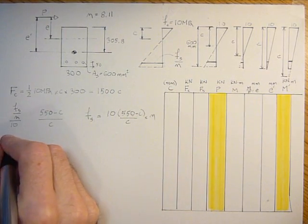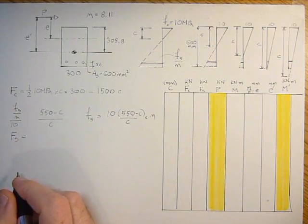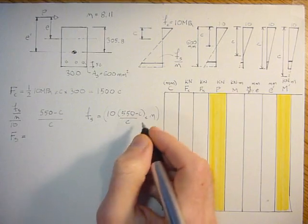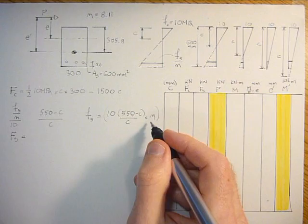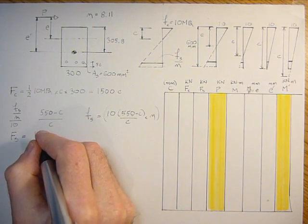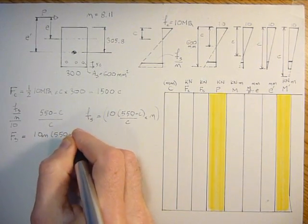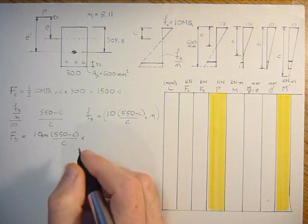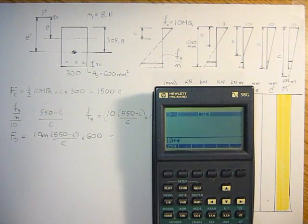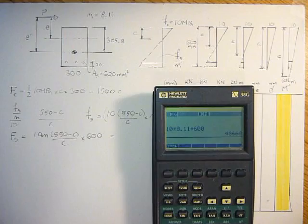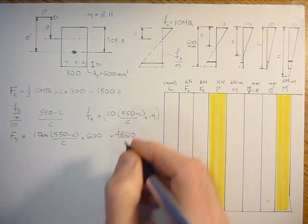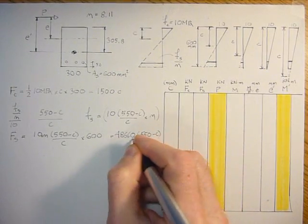And once we have this, we can calculate the force in the steel. The force in the steel is just the area of the steel, which is 600 mm squared, times the stress in the steel. So I'll put in directly this equation here. It's 10N times 550 minus C divided by C times the area of steel, which is 600 mm squared. We can simplify that further. 10 times N, which is 8.11 times 600, that's 48,660. So that's going to be 48,660 times 550 minus C divided by C.